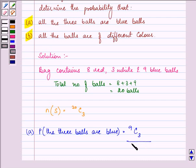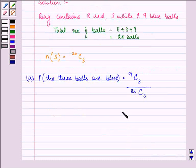divided by the total number of balls which are in the bag. So we have 9 into 8 into 7 divided by 20 into 19 into 18 which gives us the answer as 7 by 95. So this completes the solution for the first part.